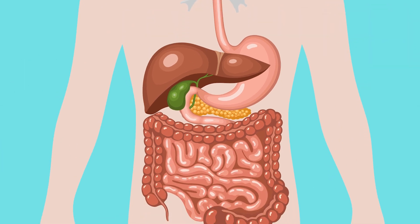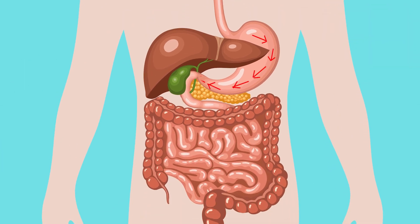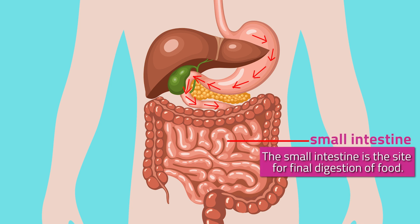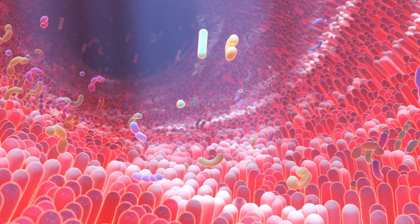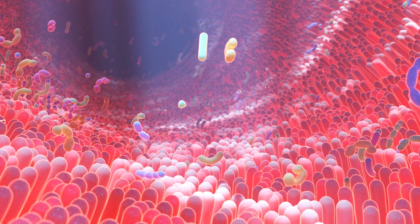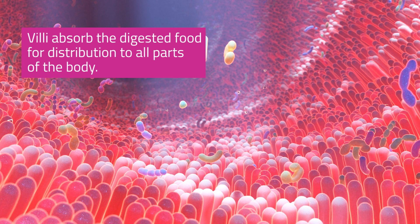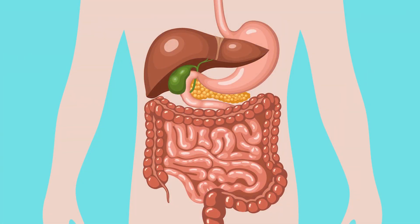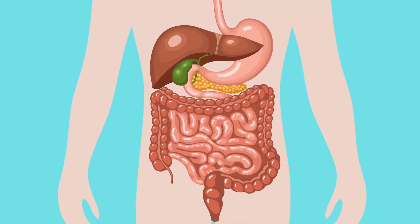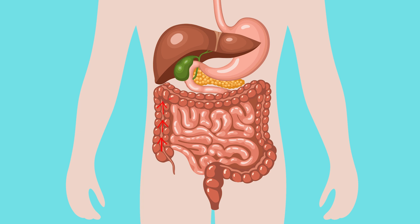The peristaltic movement of the stomach muscles mixes and pushes the partially digested food, called chyme, toward the small intestine. The small intestine is the site for final digestion of food. Through the action of enzymes, food is completely digested here. Then, in the inner linings — which are folded into small finger-like projections called villi — digested food is absorbed for distribution to all parts of the body.